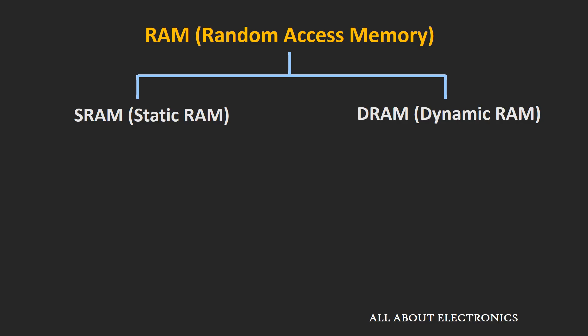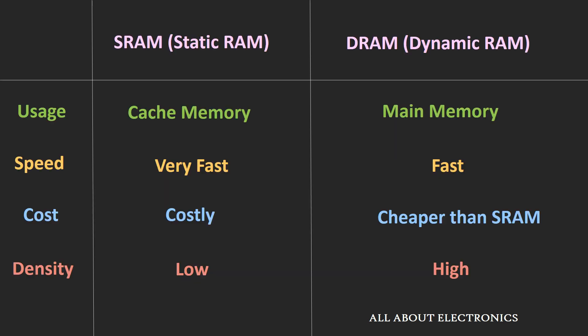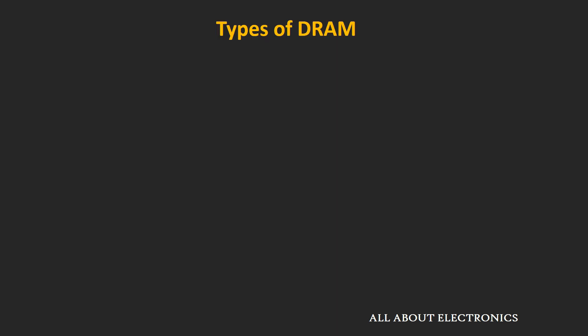We have already seen some videos regarding random access memories. In the last video, we compared static RAM and dynamic RAM in many aspects. Now in this video, let's see the different types of dynamic RAM and compare the different generations in different aspects.